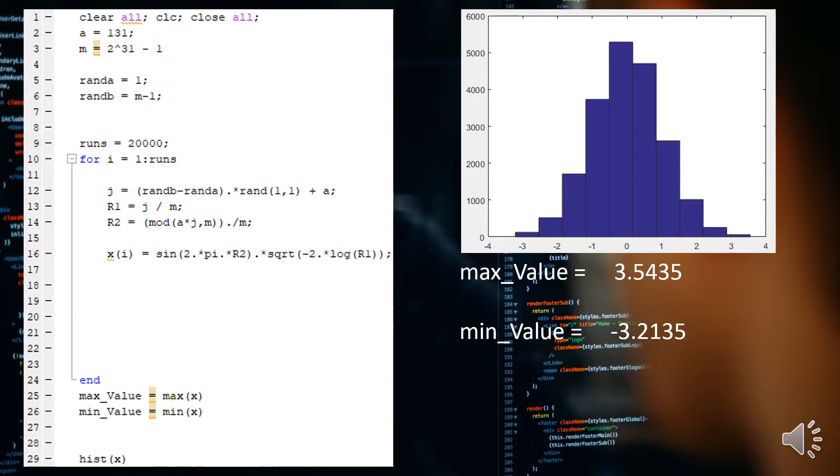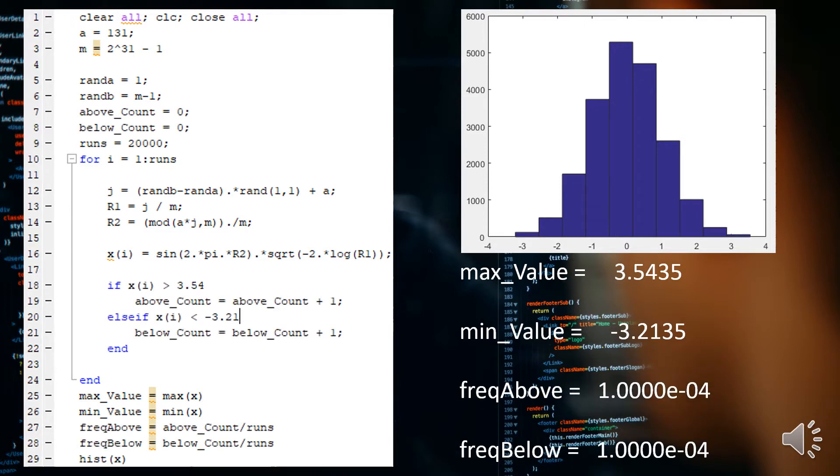Another portion of the problem mentions that we capture the frequency that if it does go above and below that range, then we should capture the frequency of it. To do that, we initialize two more variables for above_count and below_count, and then as the for loop is running for the 20,000 iterations, we capture the number of times that it does that.